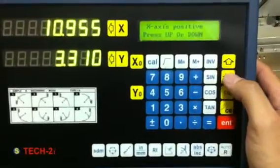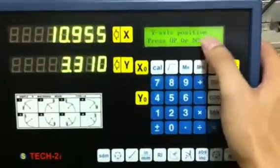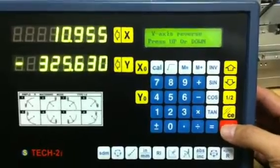For the Y axis, just press the arrow down key, and you are going to Y positive and enter to change the direction.